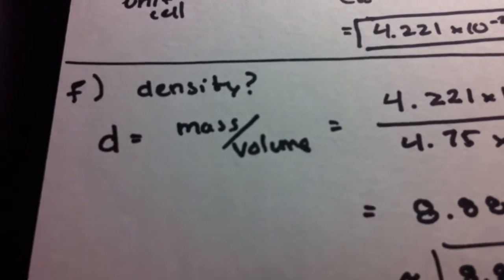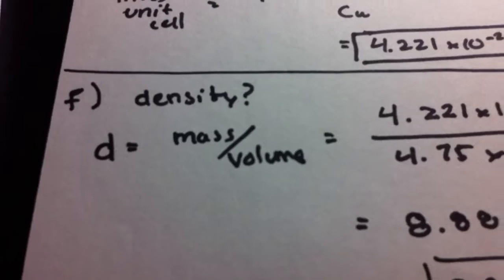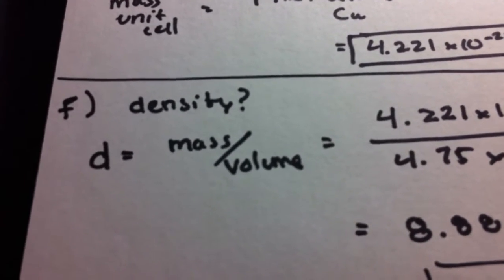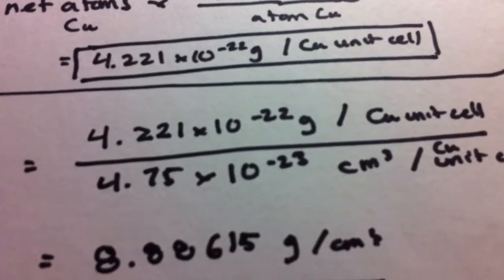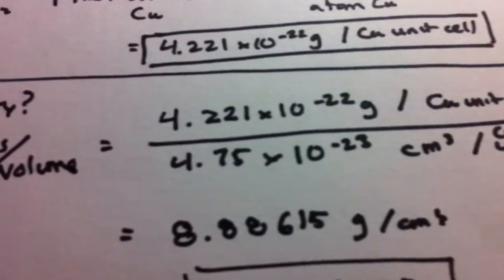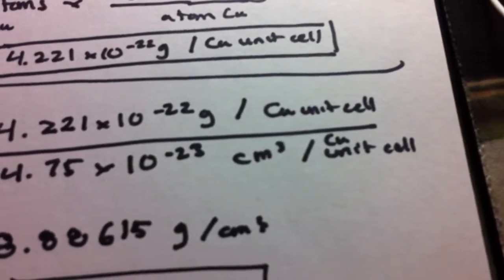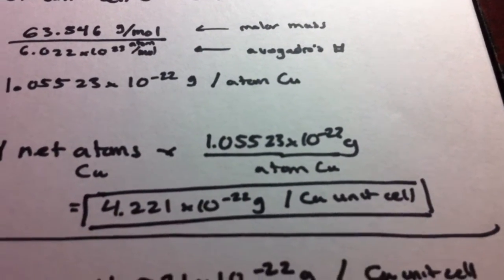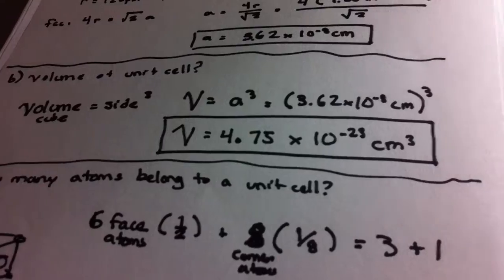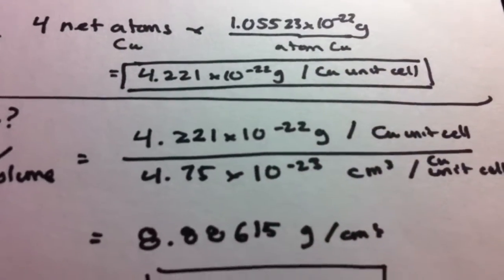Finally, F. Density. Density of the unit cell. So density is mass over volume. So mass of the unit cell over volume of the unit cell. We calculated mass of the unit cell and the volume of the unit cell over there. So plug and chug.